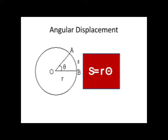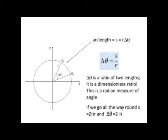Now let us consider a particle moving on a circular path of radius r. In a small time interval, it moves from position B to A and makes an angle theta at the center, formed by the arc AB, where the length of the arc is s. Then we can relate the arc as angle theta and radius r, which gives s = r theta. For a small time interval, we can write delta theta = s / r, where delta theta is a ratio of two lengths, meaning it is a dimensionless ratio, but it is measured in radians.